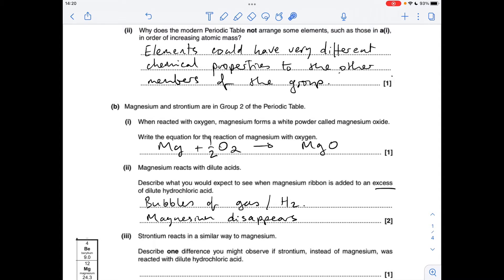For the next part it was important that you picked up on the fact that there was excess acid, so you would see bubbles of gas or bubbles of hydrogen gas. But it's important to say that the magnesium would disappear or you could say dissolve, and that's because the acid's in excess.